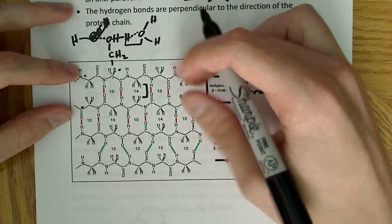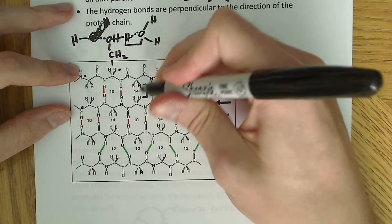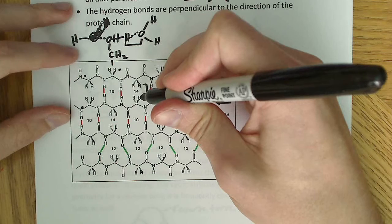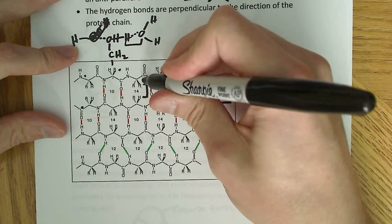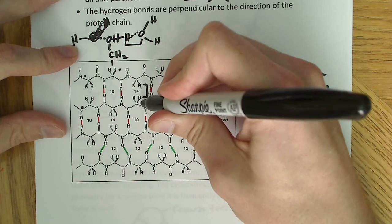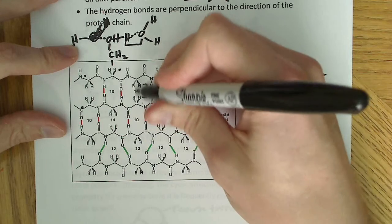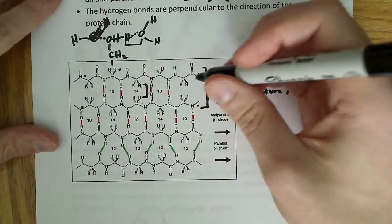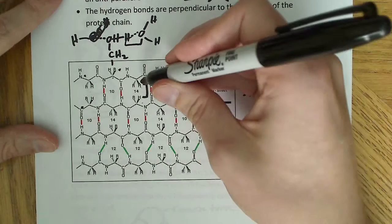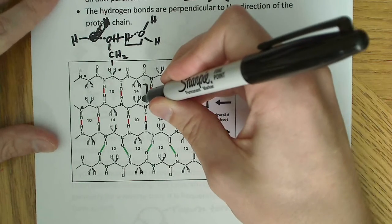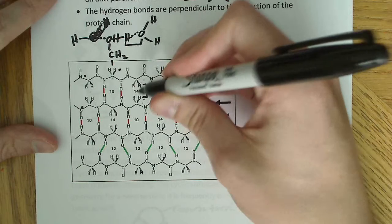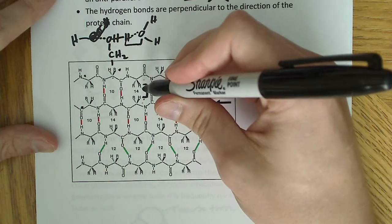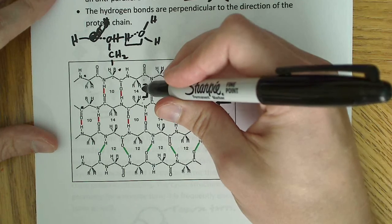You want these R groups to have a positive interaction. If this one's hydrophobic, then I also want this one to be hydrophobic. Then I get these hydrophobic interactions that I talked about in the other video, which is favorable. I don't want this to be polar and this to be hydrophobic because that's going to mess up these interactions. That's not going to allow these two to positively associate with each other.